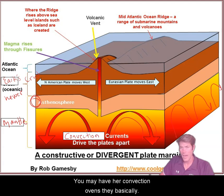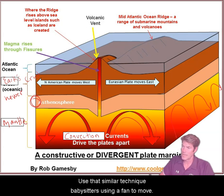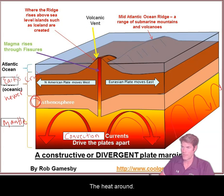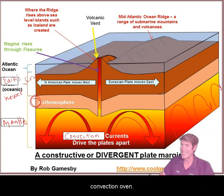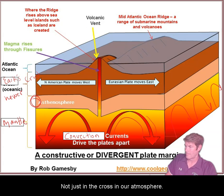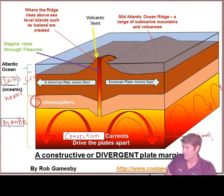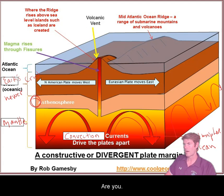You may have heard of convection ovens — they basically use a fan to move the heat around. An air fryer works a lot like a convection oven. Convection currents are huge — not just in the crust, but in our atmosphere and in the ocean.